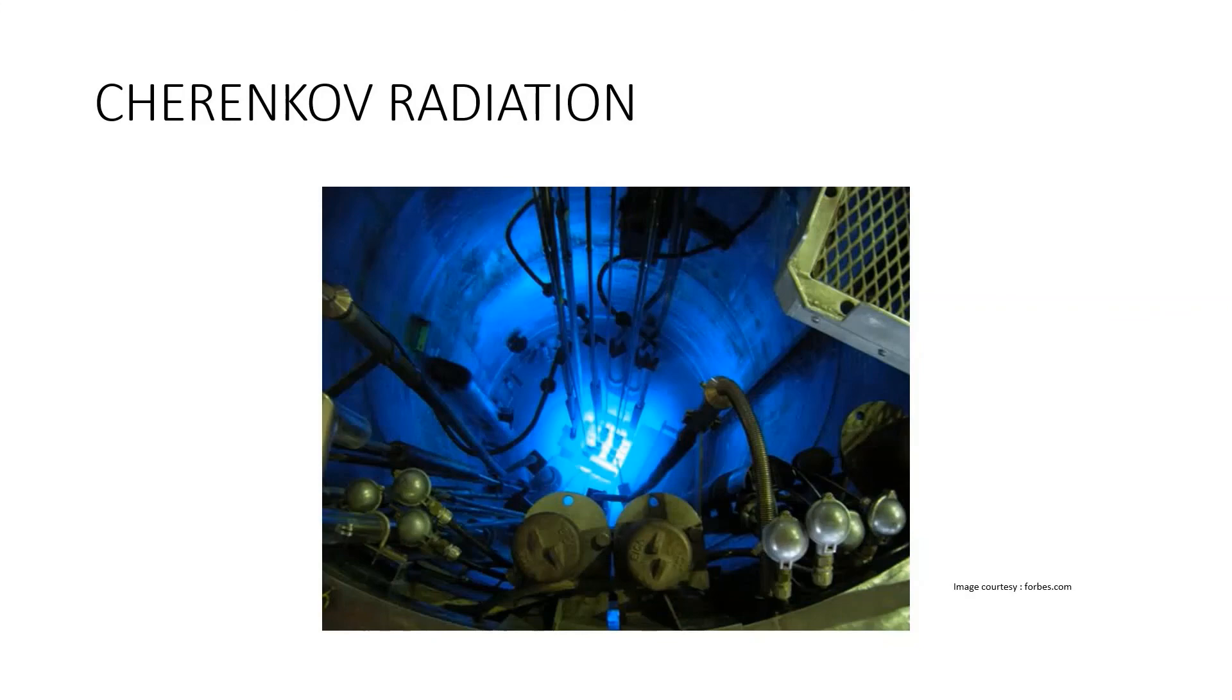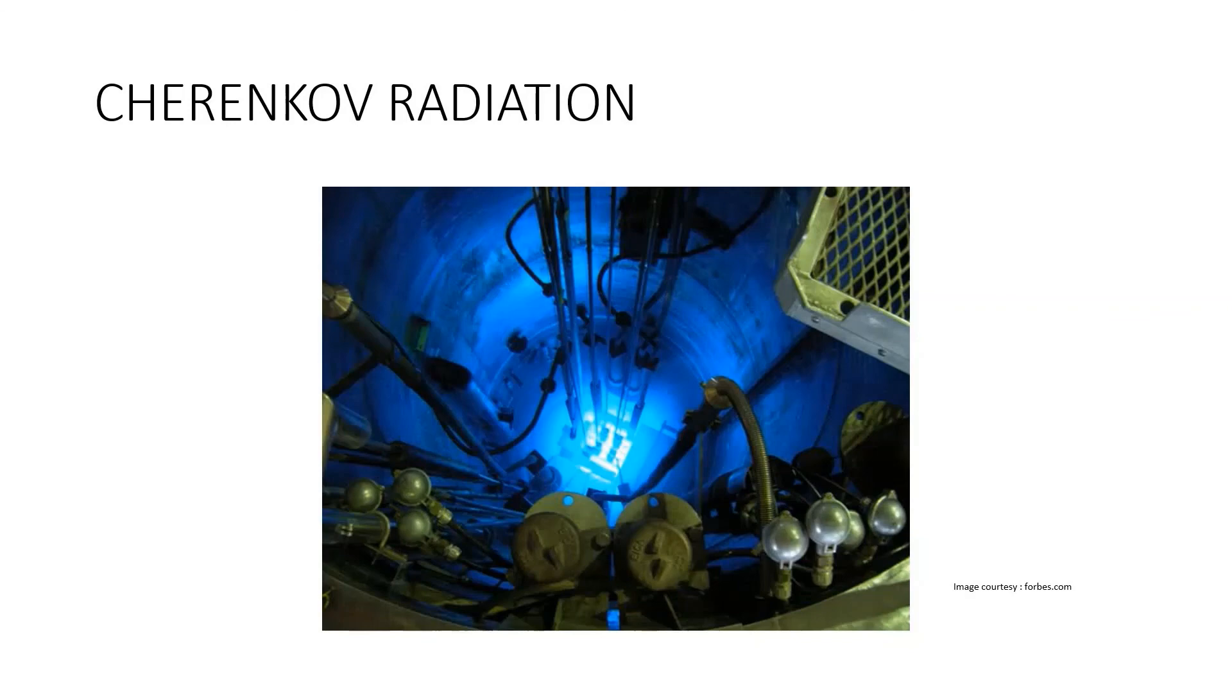Cherenkov radiation characteristically appears as a blue glow and it's most commonly seen in water surrounding nuclear reactors. Cherenkov radiation is electromagnetic radiation emitted when a charged particle, such as an electron or positron, passes through a dielectric medium at a speed greater than the phase velocity of light in that medium. Phase velocity is the speed of propagation of a wave.